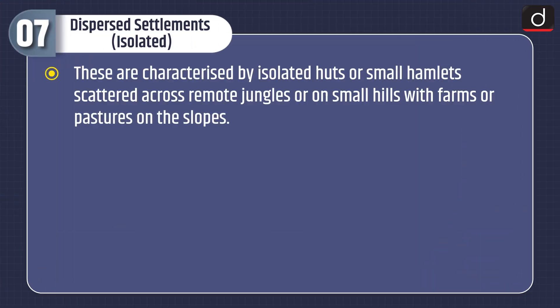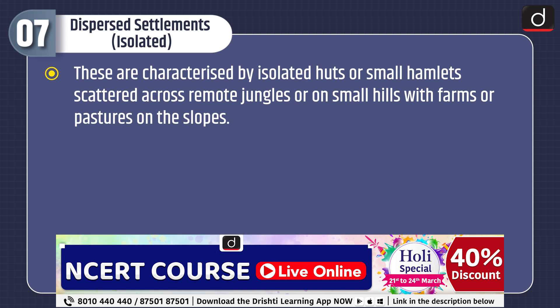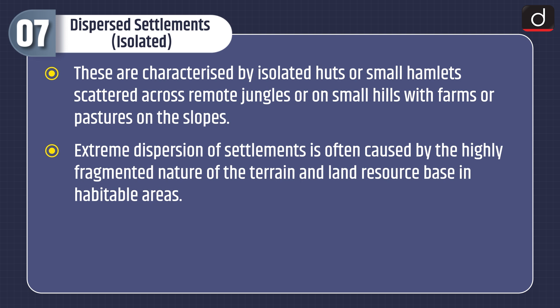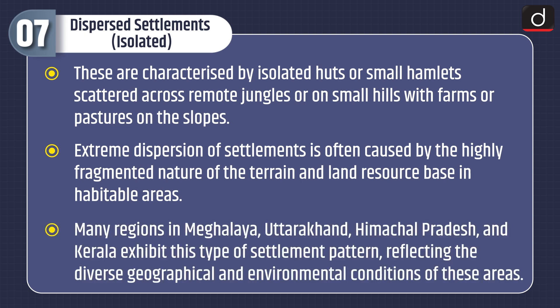Dispersed or isolated settlements are characterized by isolated huts or small hamlets scattered across remote jungles or on small hills with farms or pastures on the slopes. Extreme dispersion is often caused by the highly fragmented nature of the terrain and land resource base in habitable areas. Many regions in Meghalaya, Uttaranchal, Himachal Pradesh and Kerala exhibit this type of settlement pattern, reflecting the diverse geographical and environmental conditions of these areas.